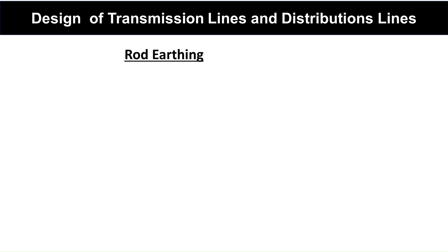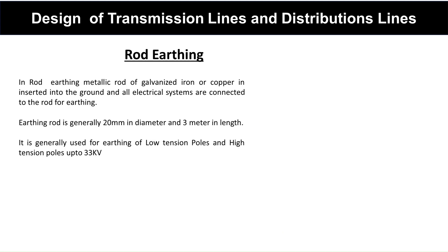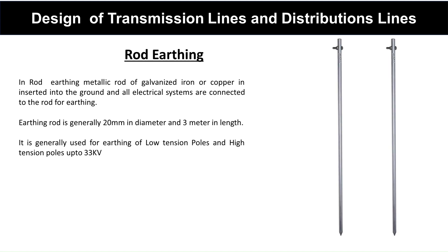Rod earthing: In rod earthing, a metallic rod of galvanized iron or copper is inserted into the ground and all electrical systems are connected to the rod. The earthing rod is generally 20 mm in diameter and 3 meters in length. It is generally used for earthing of low-tension poles and high-tension poles up to 33 kV.